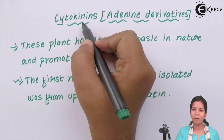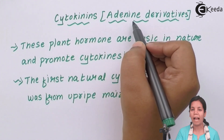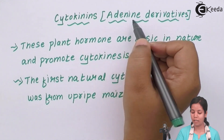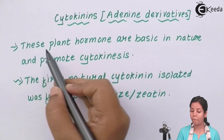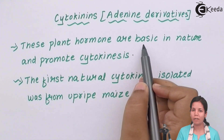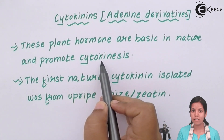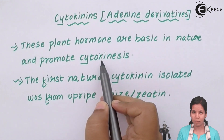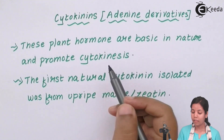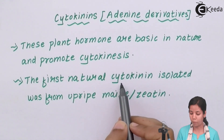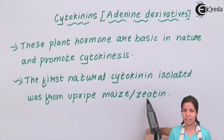Cytokinins are the second plant hormone. They are basically adenine derivatives — adenine is a chemical compound present in cytokinins. They are basic in nature as compared to auxins, which are acidic. Cytokinins promote cytokinesis, which is a part of cell division — specifically the formation of cytoplasm. The first natural cytokinin that was isolated was from unripe maize, or zeatin.